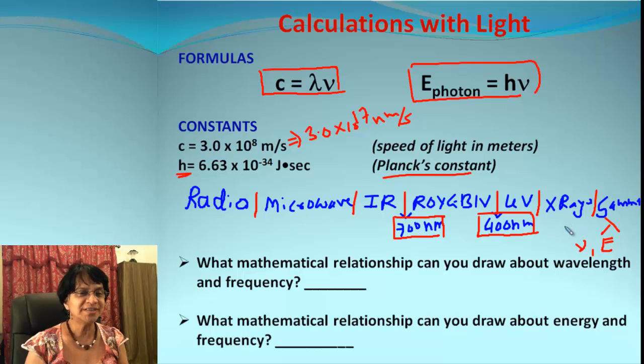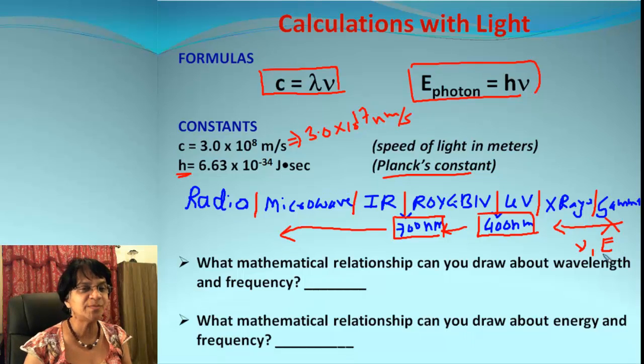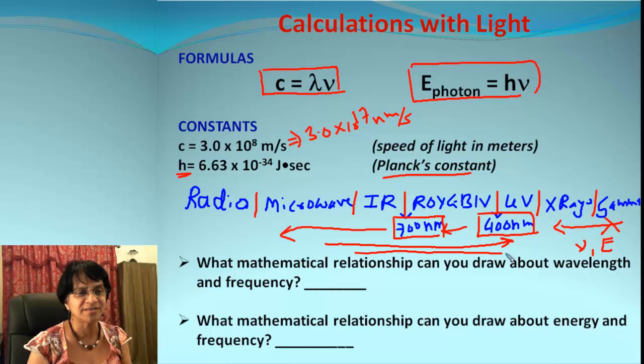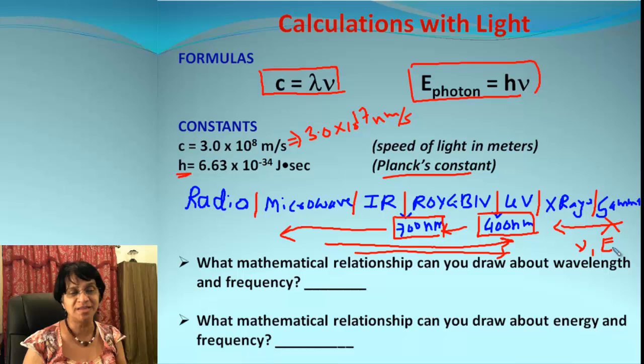You already know that wavelength lambda will be increasing as you go from right to left, and the other two variables which is energy and frequency, they will be increasing in reverse order. So what mathematical relationship can you draw about wavelength and frequency? Wavelength and frequency are exactly opposite to each other. If one goes up, the other goes down, or if one goes down, other goes up. That type of relationship is called inverse.